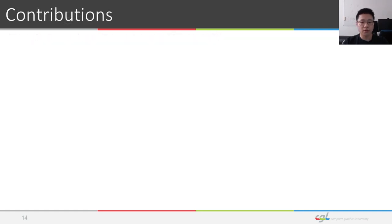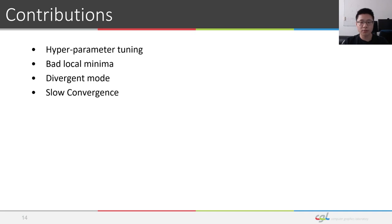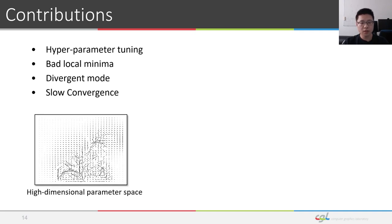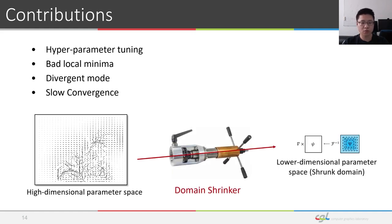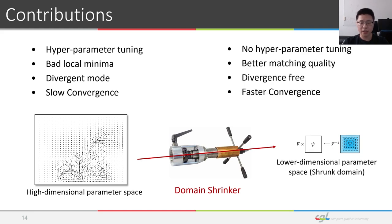Our proposed methods aim to solve these previously mentioned challenges through a dimensionality reduction of the force field parameters. Similarly to the movie, Honey, I Shrunk the Kids, we use a carefully designed domain shrinker, which removes the need of parameter tuning, achieves better keyframe matching, removes divergent modes of the force fields, and provides faster and better convergence.